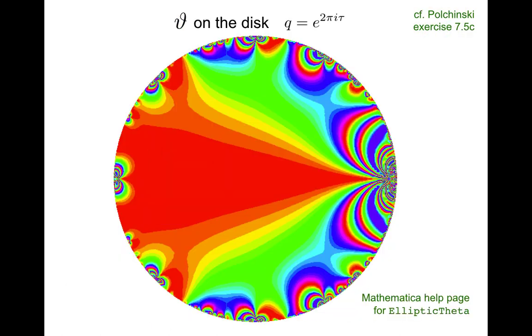Another way to visualize this structure is to go to this variable, q, and you get this beautiful pattern. And the mathematical code for this picture is actually on the help page for the theta function.